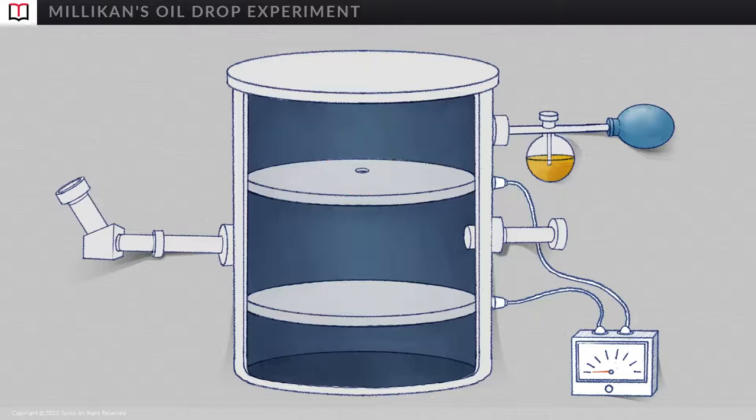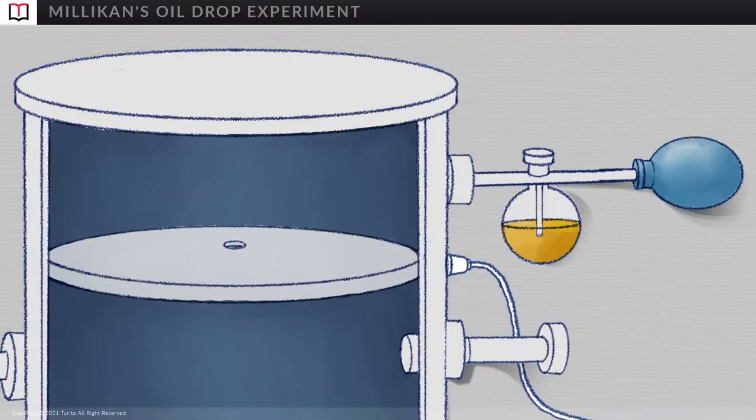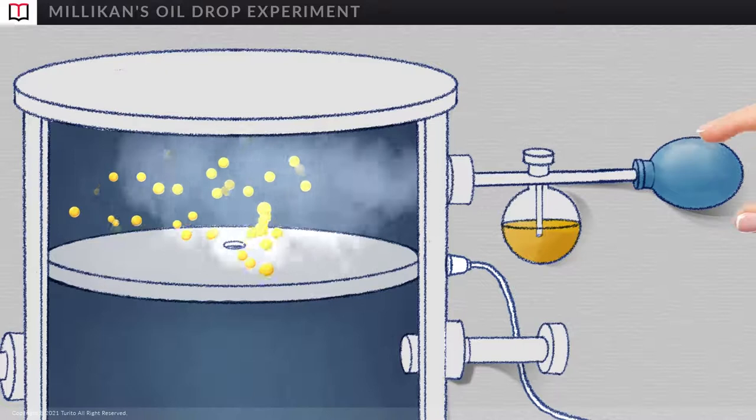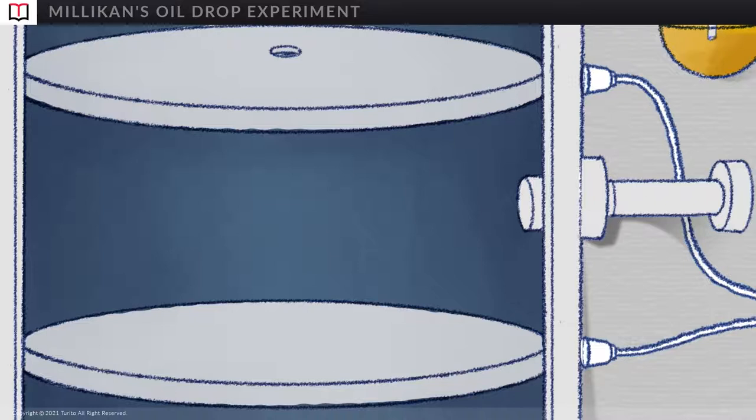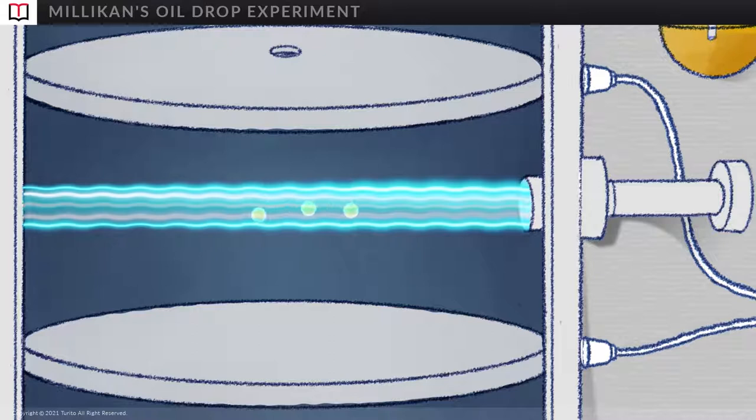Now, let us see the working of the experiment. A fine mist of oil droplets was sprayed into the chamber using an atomizer. The oil was so chosen that it had a low vapor pressure. And it incorporated the electrons by ionization of gas taken in the other chamber, that is the electrode one, when x-ray was applied or x-ray was emitted in that particular space.